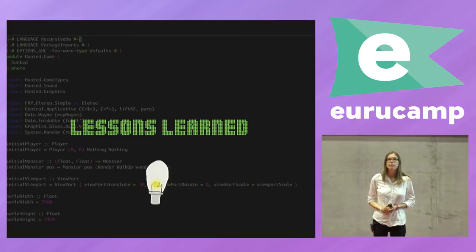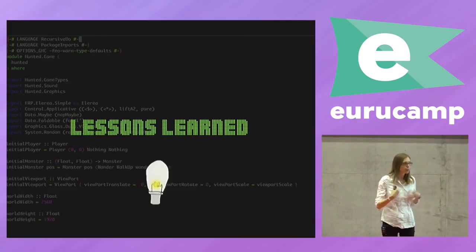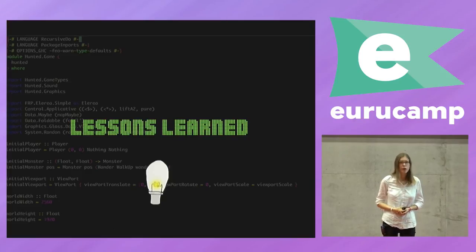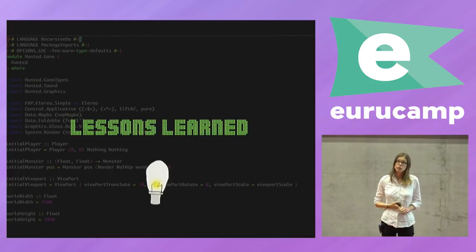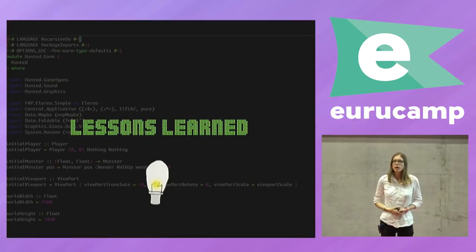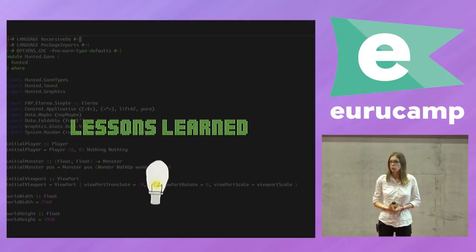So what are the lessons I learned from this whole process? First, let's talk about Haskell. Haskell has lots of nice things going for it. The types allow you to really describe your state in a very nice, readable way. Pattern matching is really great for describing transitions from one state to another. And the result is fast — it's compiled down to an executable that runs fast.